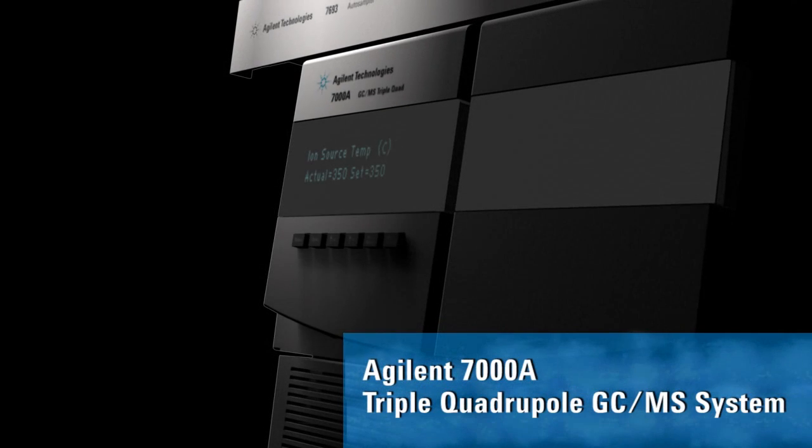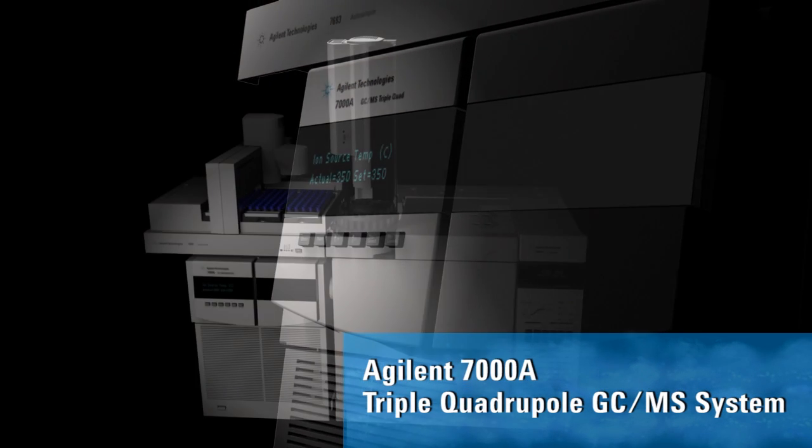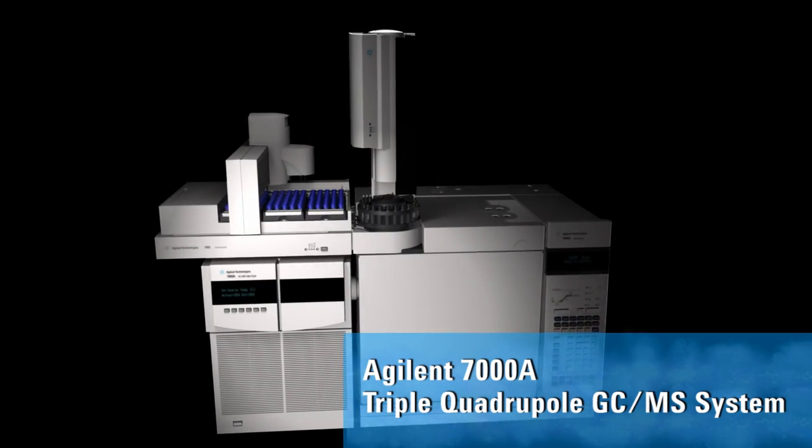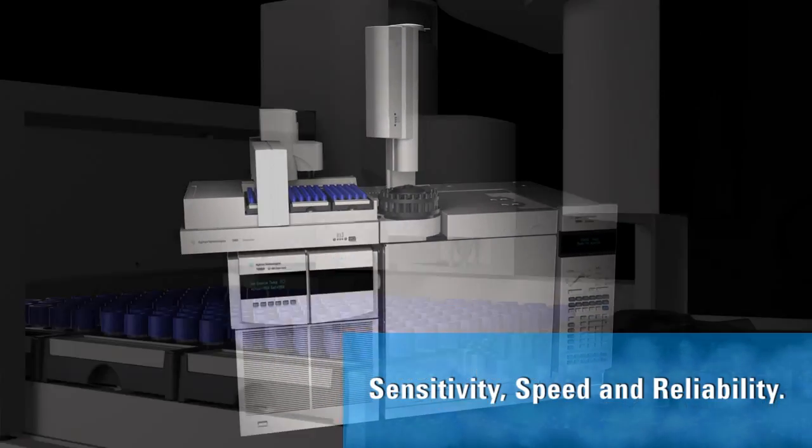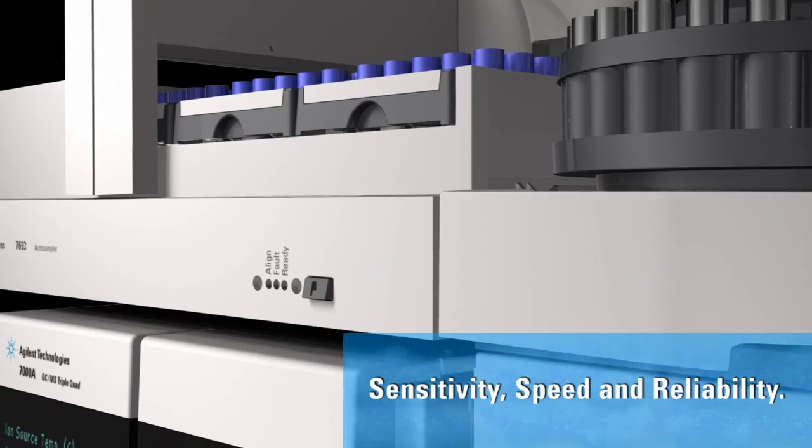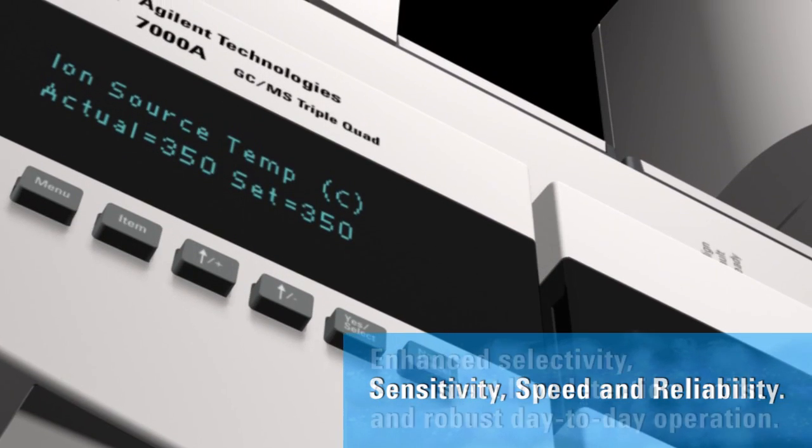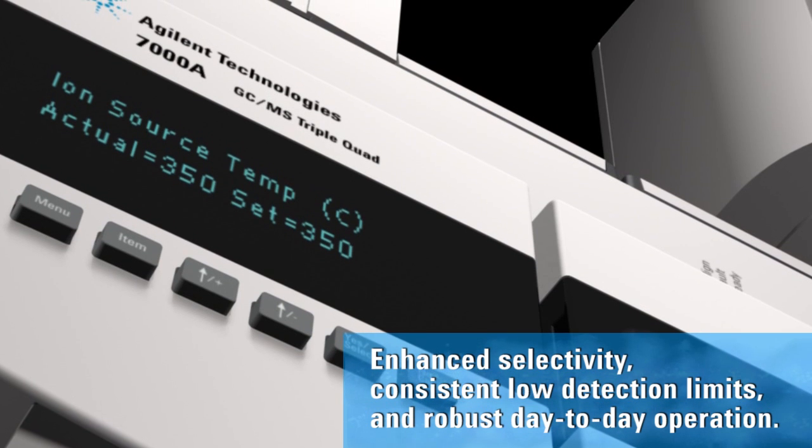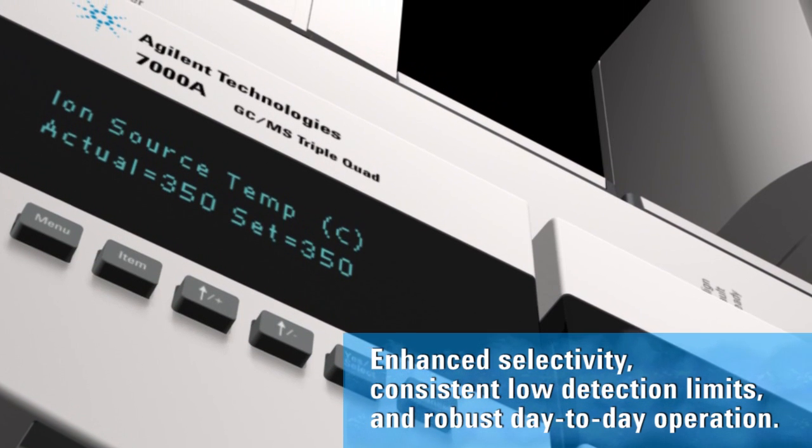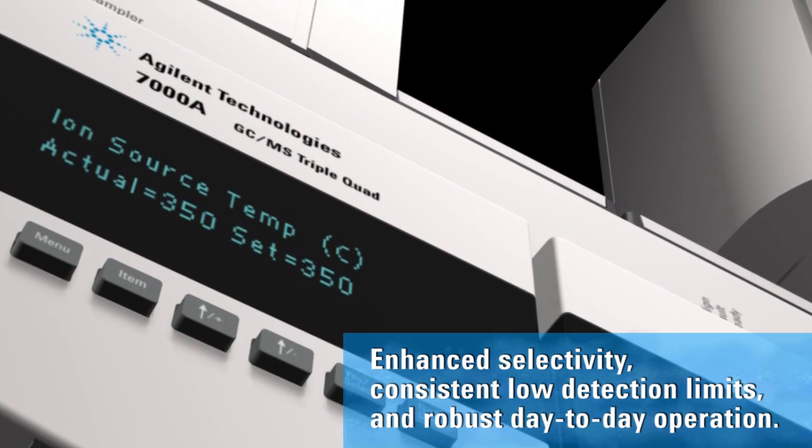The 7000A triple quadrupole GC-MS is the first quadrupole MS-MS system designed specifically for the unique requirements of gas chromatography applications. These requirements include enhanced selectivity, consistent low detection limits, and robust day-to-day operation.